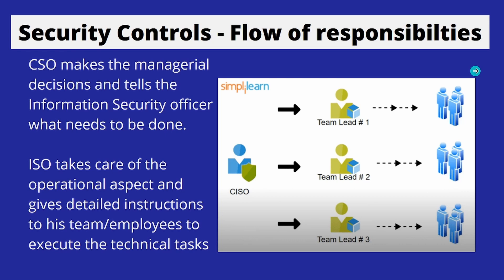Security controls flow of responsibilities: The chief security officer makes the managerial decisions and tells the information security officer what needs to be done. Once the information security officer receives the directives, he takes care of the operational aspect and gives detailed instructions to his team of employees to execute the technical tasks.